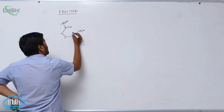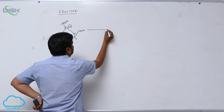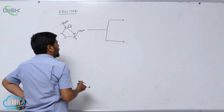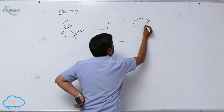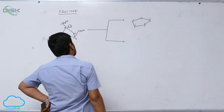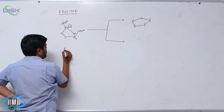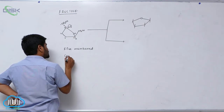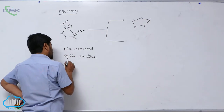Now, this lone pair of electrons attached to this oxygen causes this bond to shift and form a cyclic structure. This is known as the furanose structure. Due to this particular cyclic linkage, a 5-membered cyclic structure is formed, known as furanose.